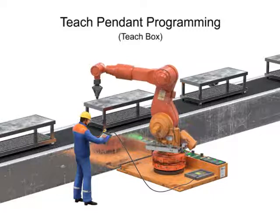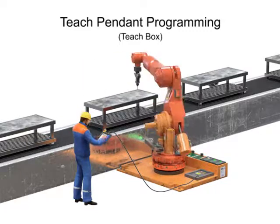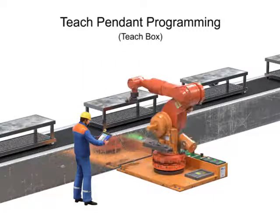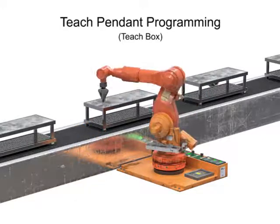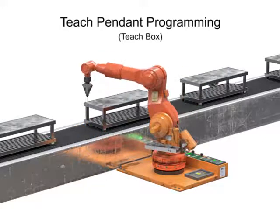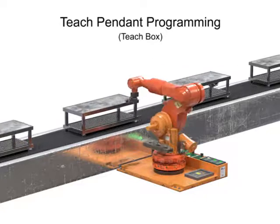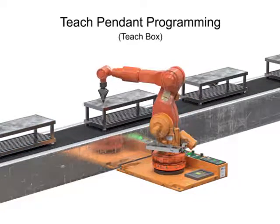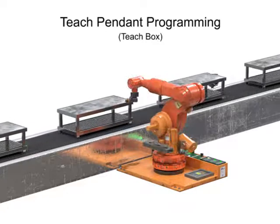Once the technician has recorded and tested the program, the teach pendant is disconnected and the robot can operate the stored program at full speed. Teach pendant programming is often associated with controlled path and point-to-point control.